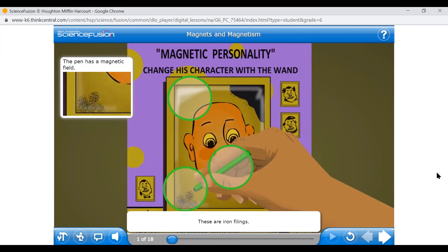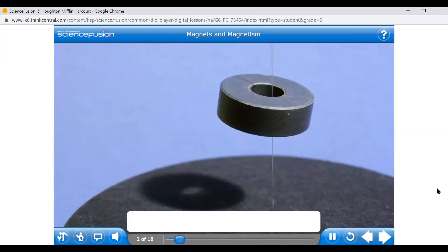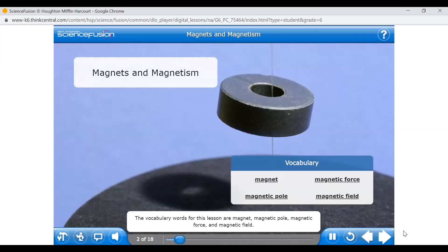These are iron filings. Can you see them move a bit? They are in the pen's magnetic field. Welcome to the lesson, Magnets and Magnetism. In this lesson, you'll learn about the properties of magnets, different types of magnets, and how they are useful. The vocabulary words for this lesson are magnet, magnetic pole, magnetic force, and magnetic field.